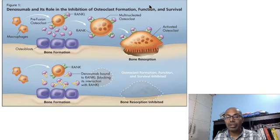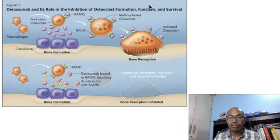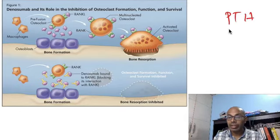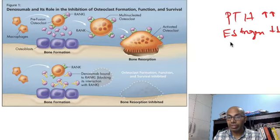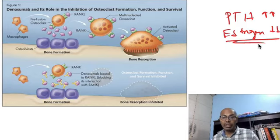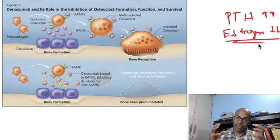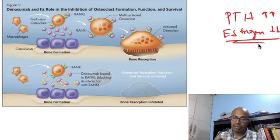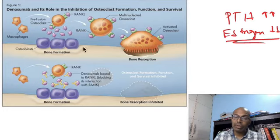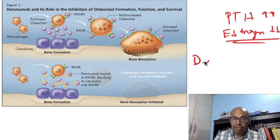There are various factors that stimulate RANK ligand release from the osteoblast. Parathyroid hormone (PTH) increases RANK ligand. Estrogen, on the other hand, decreases RANK ligand release from the osteoblast, because estrogen protects bone mass in both men and women — thereby increasing bone formation. You should also know the drug denosumab — do you know what it does?